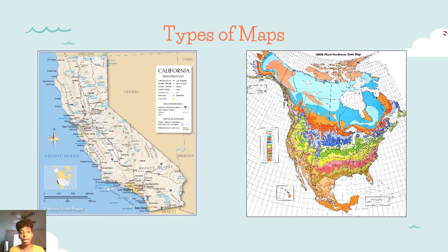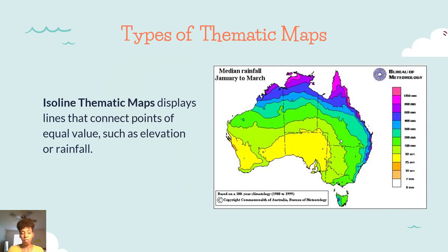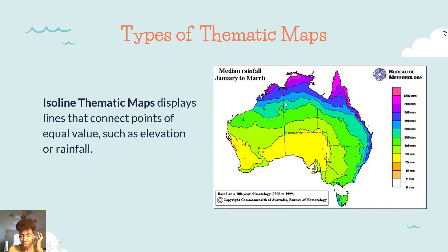Let's look at different types of thematic maps. This is called an isoline thematic map. As you see here, it displays lines and connection points to show equal values, such as elevation and rainfall. In this case, it's showing the equal values and variation of rainfall in Australia.